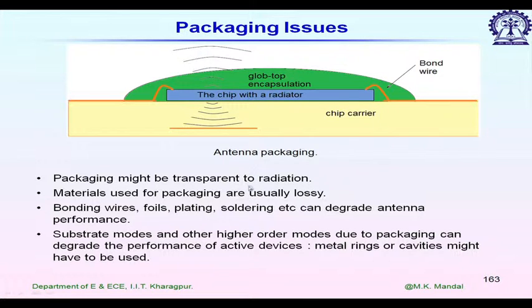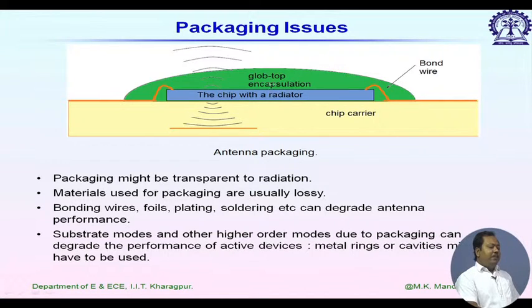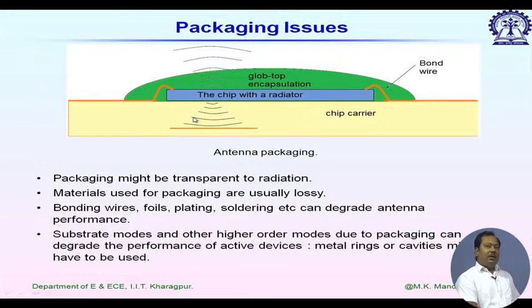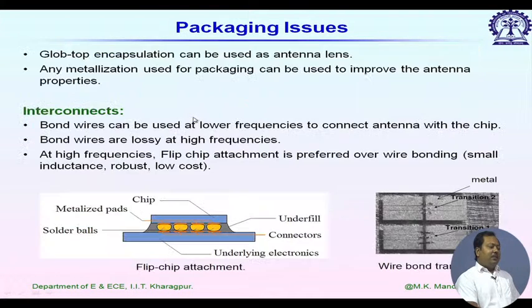The packaging material should be transparent to radiation; otherwise, the electromagnetic wave radiated by the antenna will not come out. This must be kept in mind when selecting packaging material. The packaging layer itself can support surface wave modes, and coupling between the antenna structure and external circuits is a concern. Typically, metal rings or cavities are used to isolate the radiating structure from the rest of the structures.